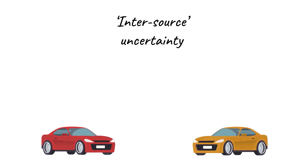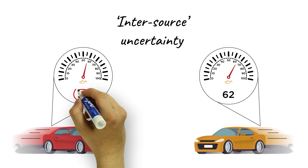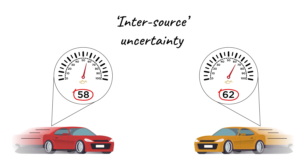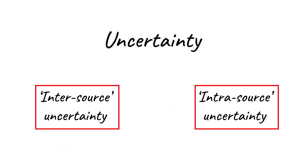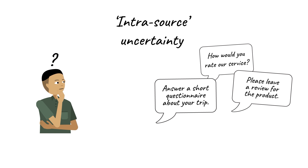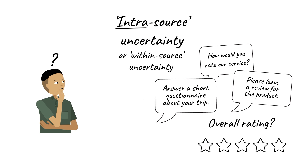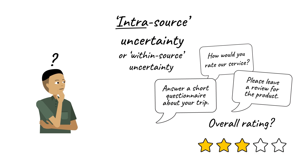Measurements are uncertain. For example, the speedometers of two cars travelling at the same speed may show two different speeds. This difference between sources is intersource uncertainty. People are often uncertain too. When they give ratings or answer questionnaires, intersource uncertainty underlies each individual response. They're unsure and could go either way, so some information is lost.